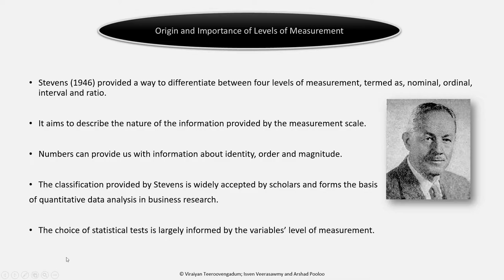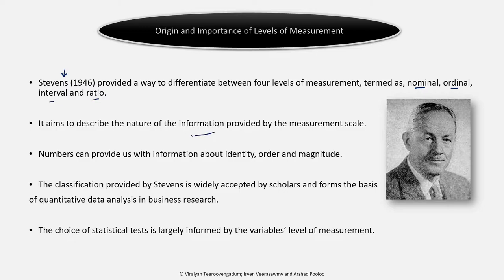The classification was provided by a statistician named Stephen. We have four levels of measurement: nominal, ordinal, interval, and ratio. The classification is basically based on the amount of information we provide — the amount of information that the scale provides. When we assign numbers to a property or characteristic of a phenomenon, we want to capture information.